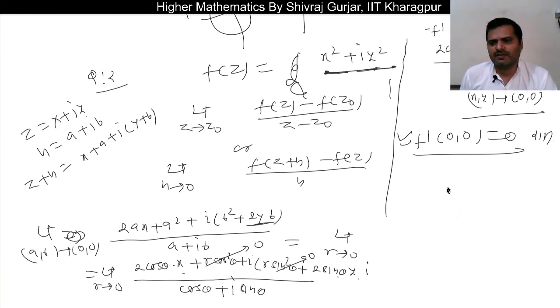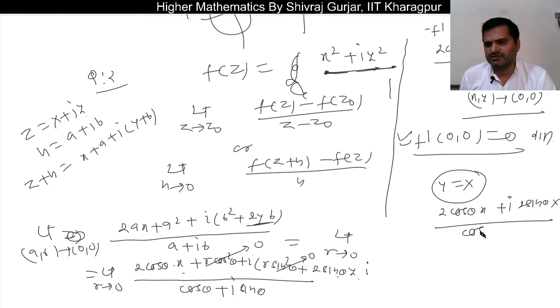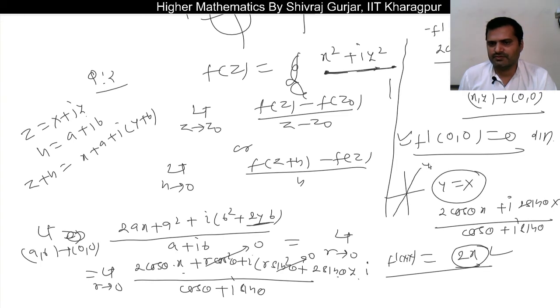We can see if y equals x, then we have 2x cos θ + 2ix sin θ = 2x(cos θ + i sin θ). When y = x, this equals 2x, and the denominator cancels. So when x and y are same, this is differentiable along the line y equals x.